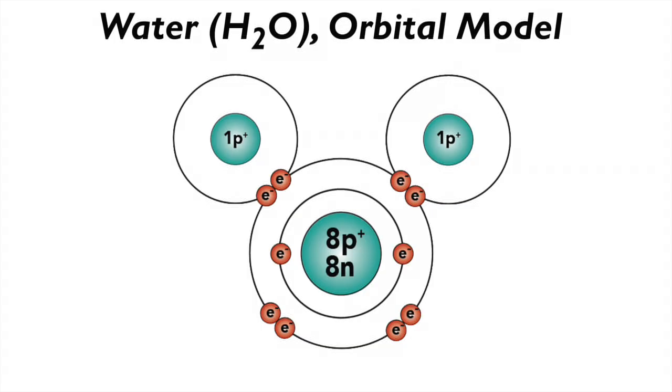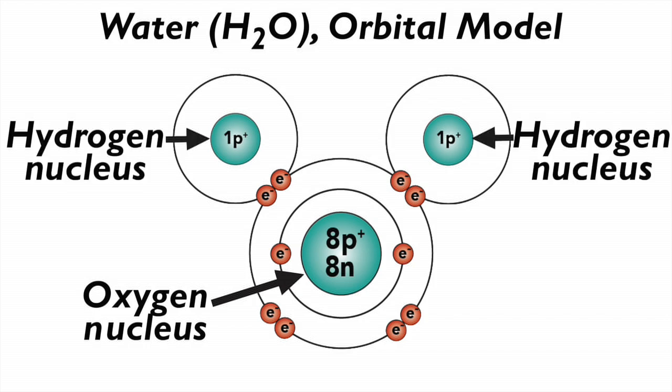Here's an orbital model of water. The oxygen has eight protons in its nucleus. Protons are positively charged, so that's eight positive charges. Each hydrogen atom has a nucleus with just one proton, one positive charge.